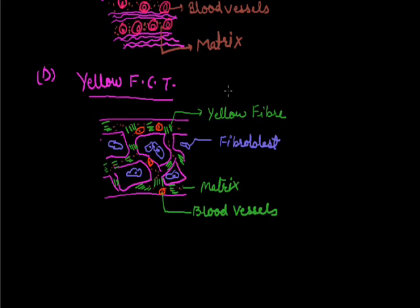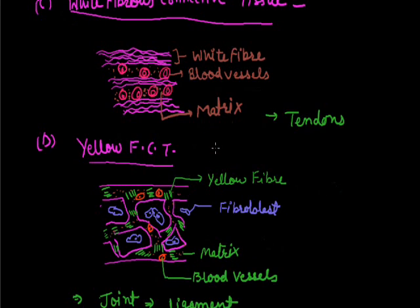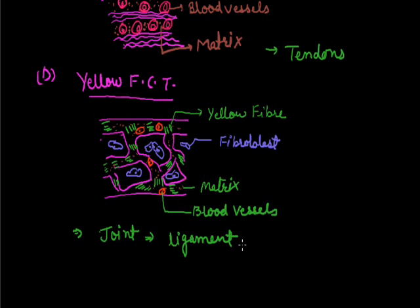Yellow Fibrous Connective Tissue is responsible for connecting different bones or similar kinds of bones, thus forming joints. A Yellow Fibrous Connective Tissue that connects bone to bone is called a ligament. A White Fibrous Connective Tissue that connects muscle to bone is called a tendon. So tendons connect muscle with bones, while ligaments connect bone to bone.